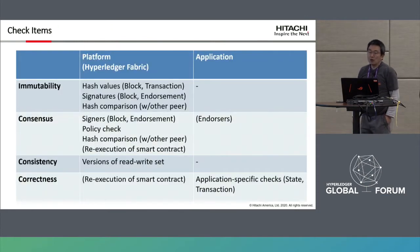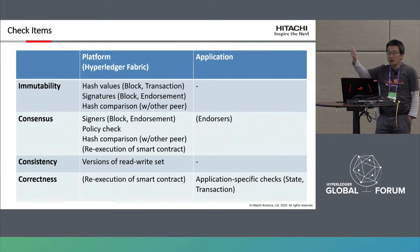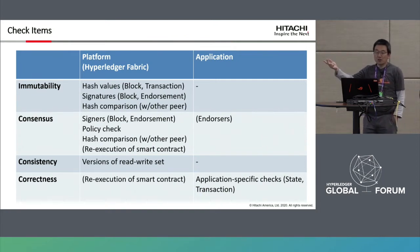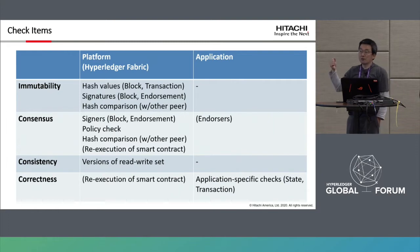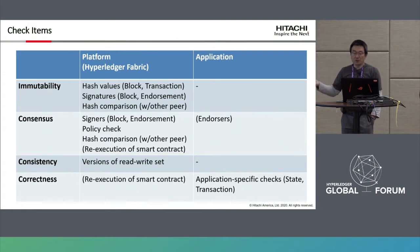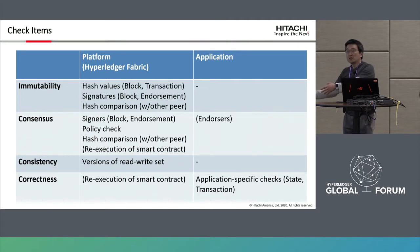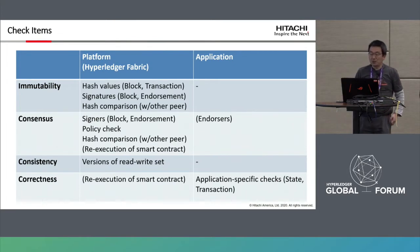At the platform level, immutability, consensus, consistency, and correctness need to be checked. At the application level, consensus — meaning whether endorsement policies are fulfilled — and application-specific checks such as state or transaction validation, and sometimes compatibility or correctness against other systems, also need to be checked.